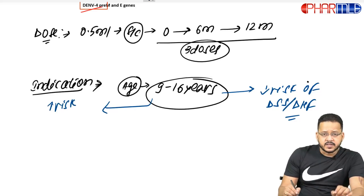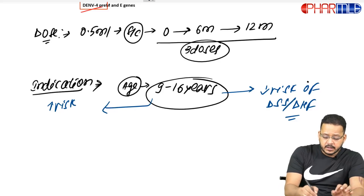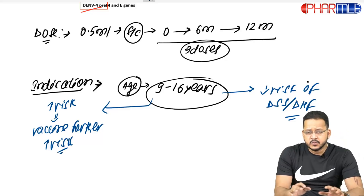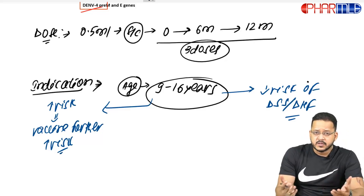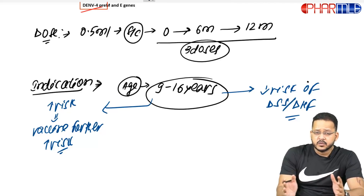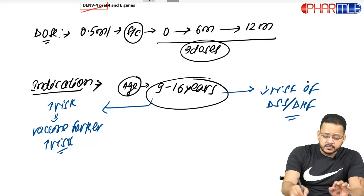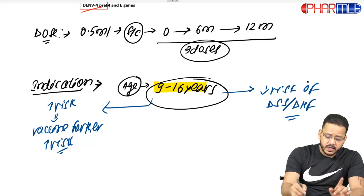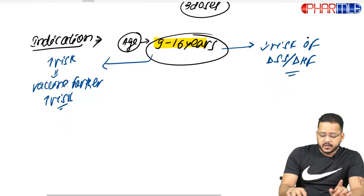Below nine years, although there is usually an increased risk of severe dengue, what has been seen is that the vaccine further increases that risk. In young children, the dengue vaccine results in even more risk of dengue hemorrhagic fever or dengue shock syndrome. So children below nine years are not included, and we have zeroed in on the age group of nine to 16 years.